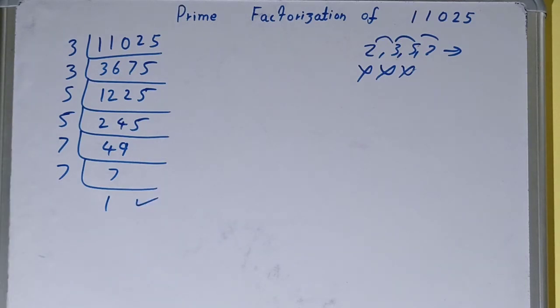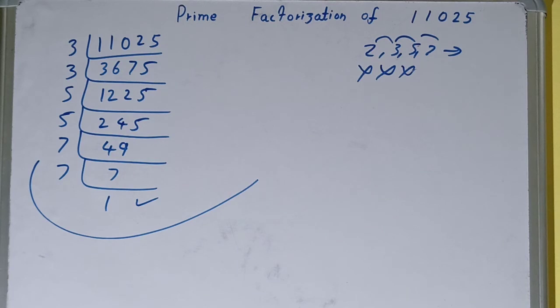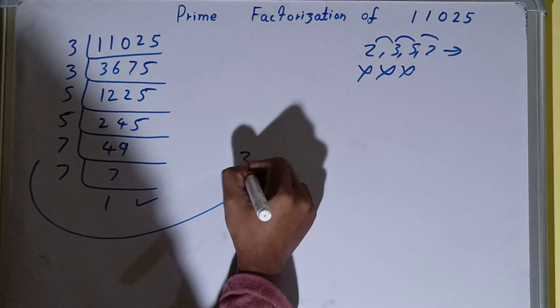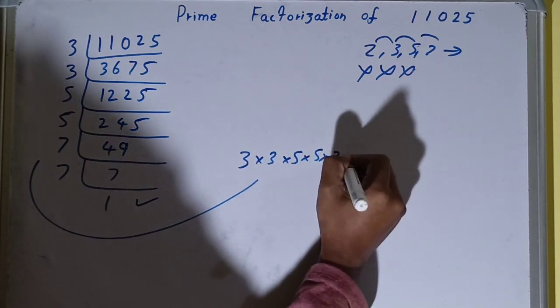Once you get 1, the work is done, and whatever you have on the left-hand side will be the set of prime factors for the number 11025. That is 3 × 3 × 5 × 5 × 7 × 7.